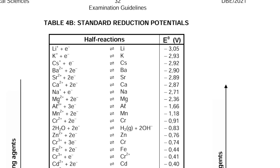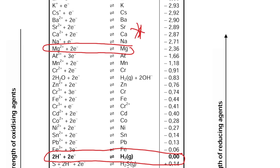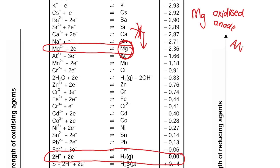We've circled magnesium on the table, then our other one — hydrogen — which is always in the middle of the table and bolded. Now, starting top right and reading down: we hit magnesium first. Magnesium comes first, it's higher up, so magnesium is oxidized — magnesium is the anode (AN OX). The oxidation half reaction is always written from right to left, so magnesium is written first, then the arrow, then Mg2+ + 2e−.